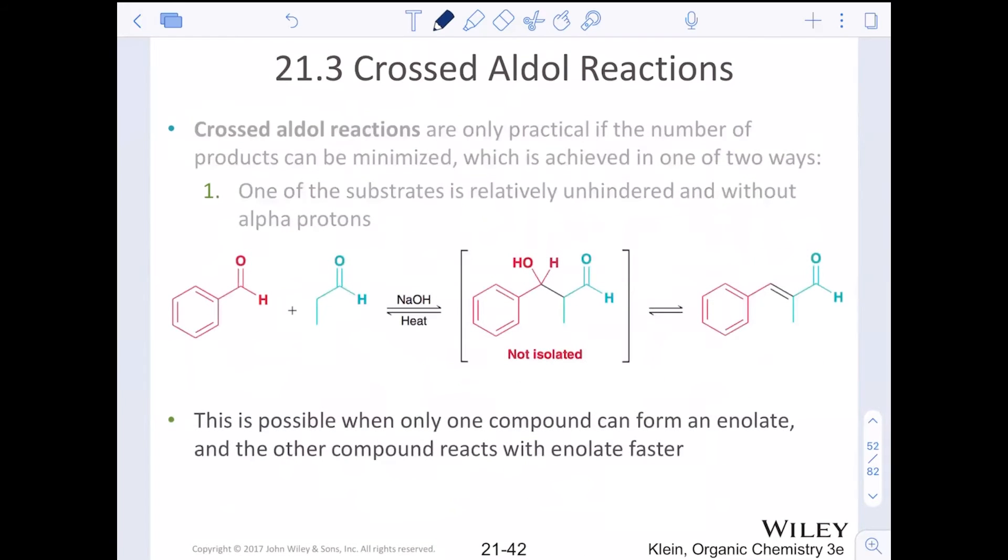What we see is that the only compound that can form an enolate is at this position. We would see that enolate form and then attack. Another aldehyde that does not have the ability to form an enolate can either be formaldehyde or it can be benzaldehyde here where the alpha position is not valid because there's no hydrogens there.